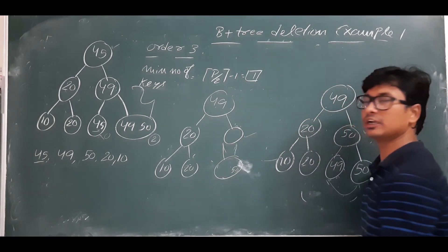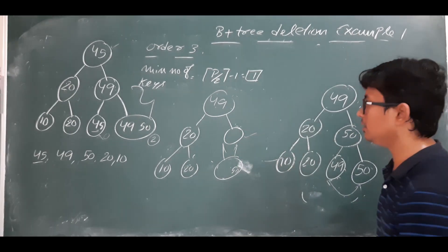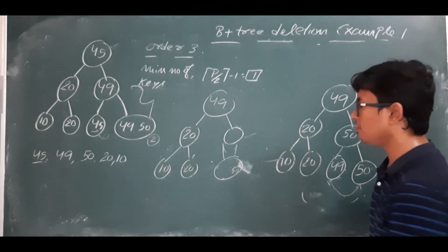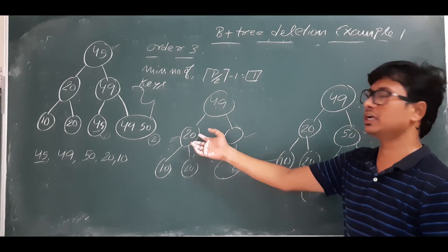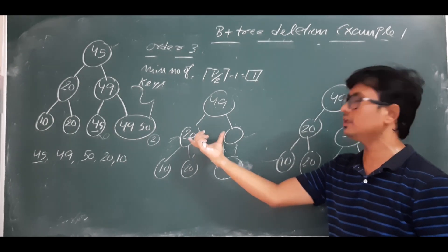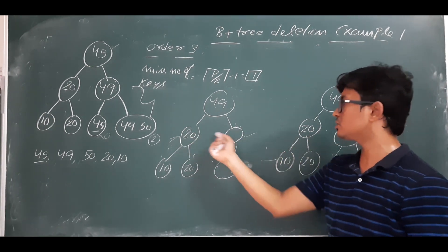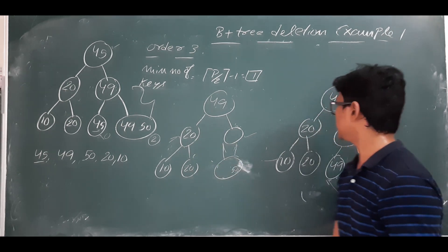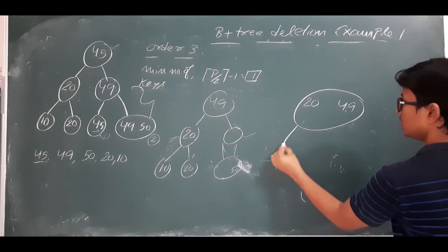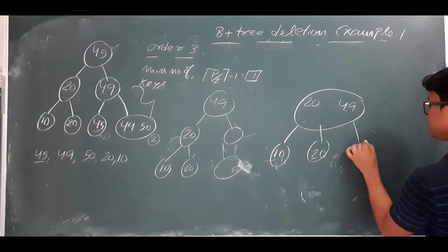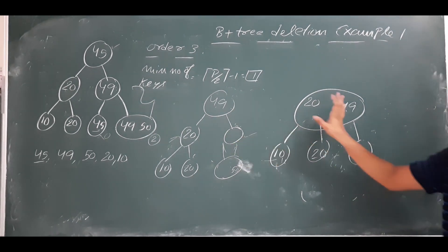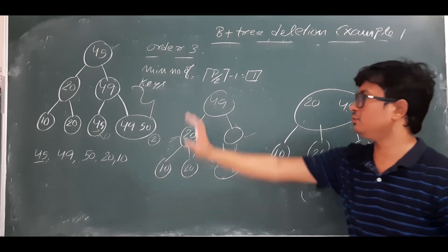The parent node now has an underflow. It tries to borrow from its left sibling, but the left sibling has the minimum number of elements and cannot give any. So we merge the parent node with its left sibling. After merging, we get 20 and 49, with children 10, 20, and 50. The height of the B+ tree is reduced.